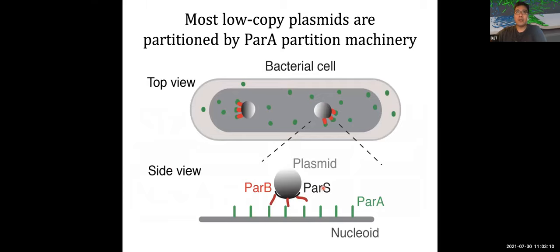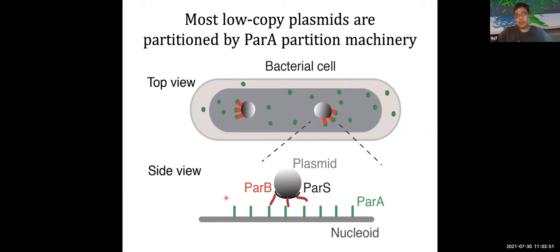For most low copy number plasmids, they are actively partitioned by partition machinery with essentially three components. ParA is the ATPase that non-specifically binds to the nucleoid. ParB is the adaptor protein that on one hand binds to the centromere-like region of the plasmid called parS, and on the other hand interacts with the chromosomally-bound ParA ATPase. This tripartite machinery is a prototype model system that people have used to dissect the fundamental principles of bacteria genome partition for the past 30 to 40 years.